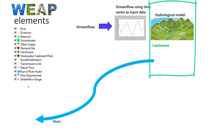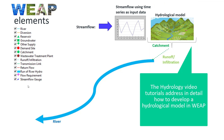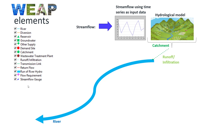To develop a hydrological model we add catchments. These represent the entire area of the basin, subbasins, or a portion of the basin when it is divided into elevation bands. These catchments must be connected to the river element by using runoff infiltration links from the catchment to the river. WIP estimates the water balance of the catchment and transfers the outflows to the river through this link.